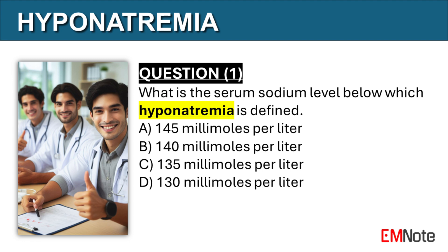Question number one: What is the serum sodium level below which hyponatremia is defined? The correct answer is C. Hyponatremia is defined as a serum sodium level below 135 millimoles per liter.